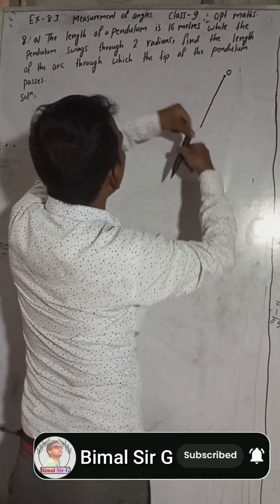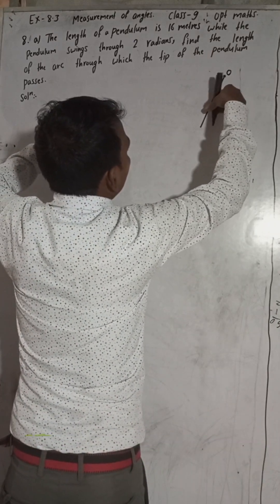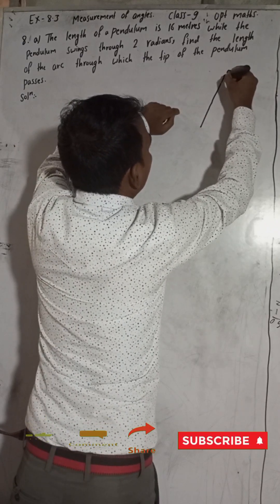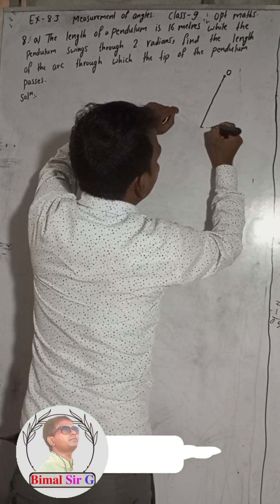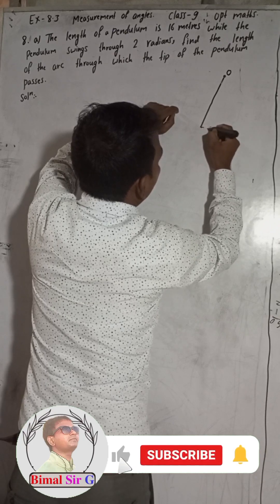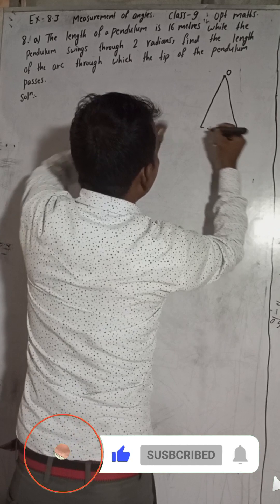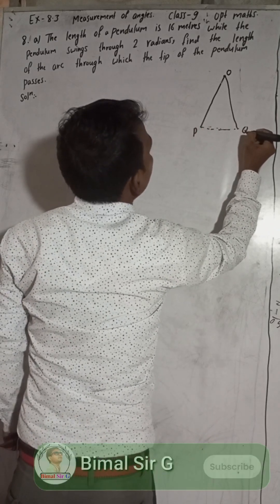So this is our length of the pendulum, and this will swing from here like this. So it may go over here. So it will come at where? From P it will come at Q.